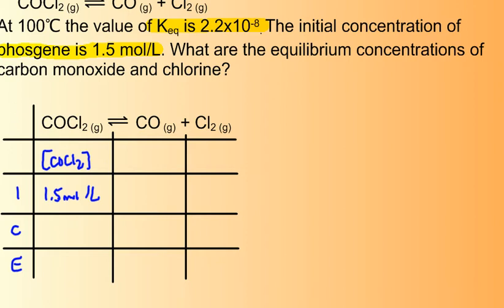Nothing else is added to the container initially, or they would tell us so. So the concentration of carbon monoxide, CO, and the concentration of Cl2 are both 0 moles per liter to begin with. Because these are 0, we know that the reaction is going to be shifting from left to right. So the concentration of COCl2 will decrease by X. And the concentrations of CO and Cl2 are both going to increase by some value X. And it's a 1 to 1 to 1 ratio here. So there are no coefficients required in the change line.